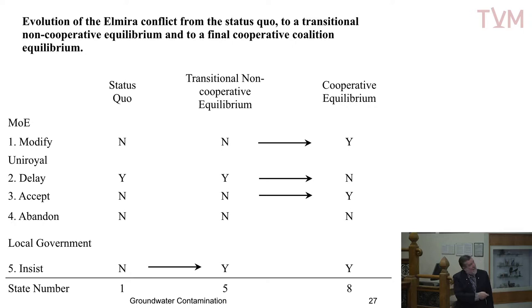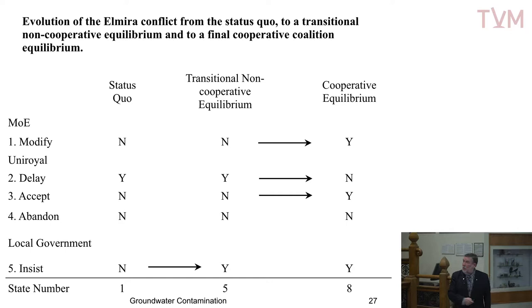For convenience, you give states a number. They preferred state eight over state five. So the Ministry of the Environment and Uniroyal said: we could both be better off if we cooperate and form a coalition. The Ministry of the Environment modified the control order, and Uniroyal went from delaying to accepting. The local government kept on strongly insisting they clean it up. That was the final scenario that occurred. The local government was absolutely furious because they were not part of the behind-the-scenes negotiations where the other two players formed a coalition and reached a final resolution.